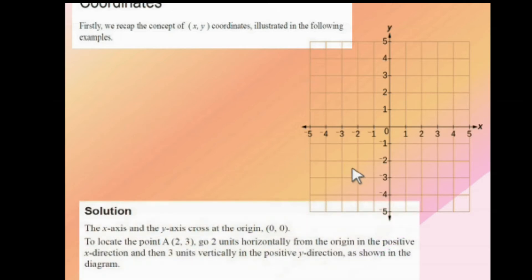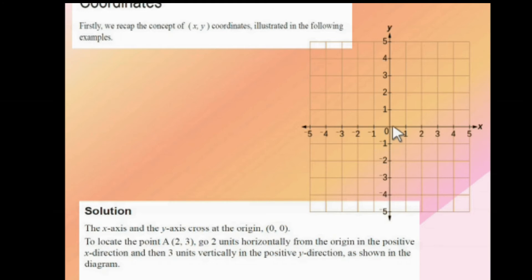Here is the example. If a point A(2, 3) is given, how do we plot it? The X-Axis and Y-Axis cross each other at a point called the origin, which is given by (0, 0). To locate point A(2, 3), go 2 units horizontally from the origin towards the positive side. Why? Because A is given as positive 2, positive 3. So horizontally you go to the 2 column.